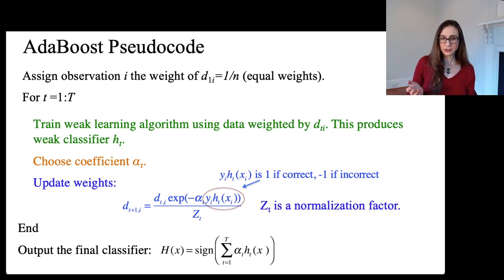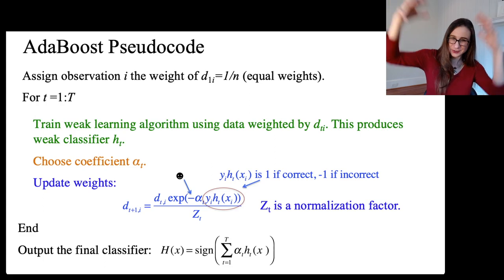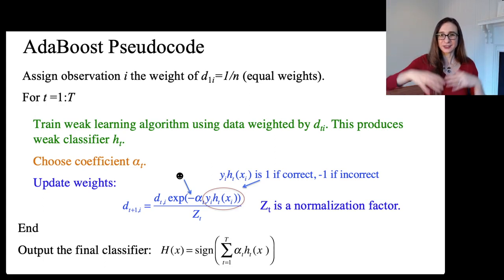So, if h_t agrees with the label y_i, then that value is one, otherwise minus one. So, it's like looking at the margins for the weak classifiers themselves. And then, this negative alpha is actually super helpful because if you were correctly classified, you get that negative alpha multiplied to you so that your weights go down, right? The easy examples' weights go down, harder examples' weights go up. And so, that negative sign is helpful.